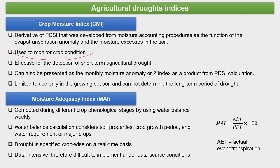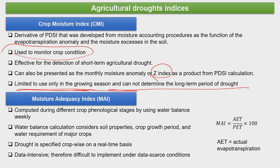The Crop Moisture Index (CMI) is used to monitor crop conditions. Remote sensing spectral images can be compared with this kind of ground-based information. CMI helps monitor crop condition and understand how much moisture is already present in the plant system. It can also be presented as a monthly moisture anomaly or Z-index as a product of PDSI calculation. A limitation of CMI is that it can only be used during the growing season and cannot determine long-term drought periods.